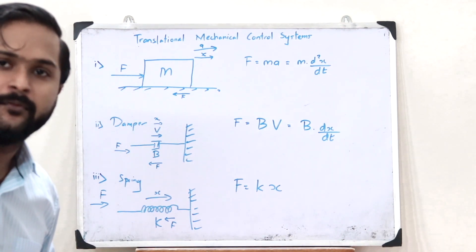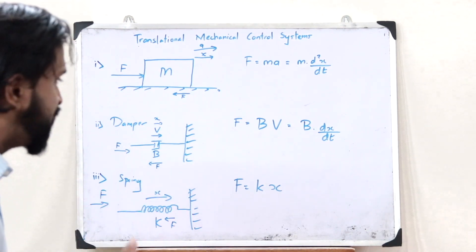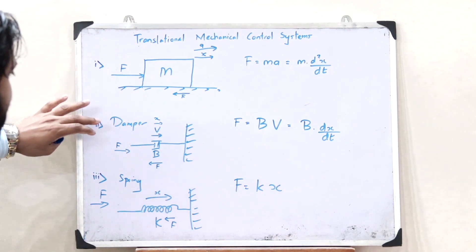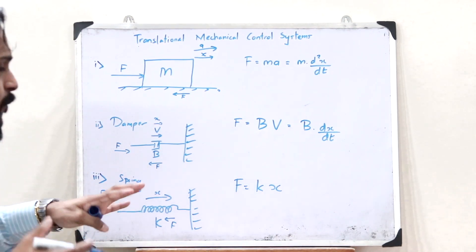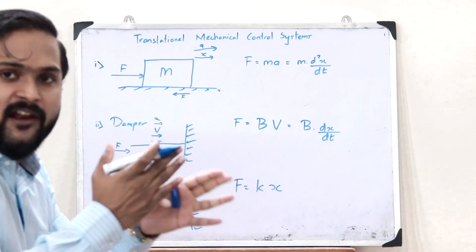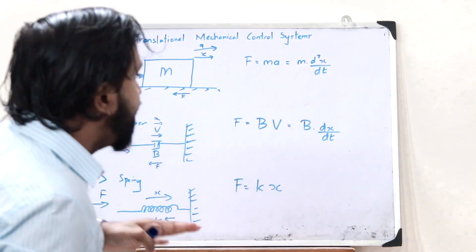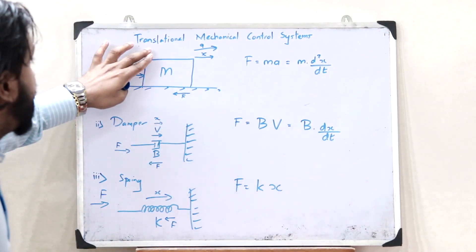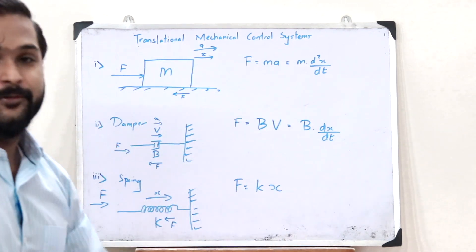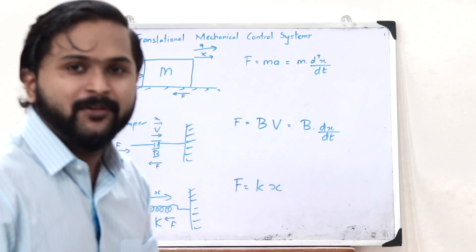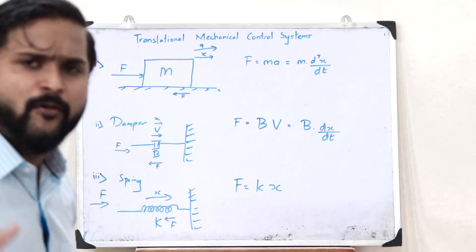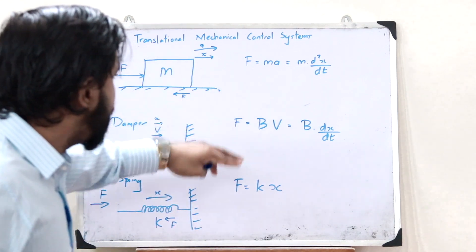So these are the three main forces acting in the case of the elemental components of a mechanical control system when it undergoes translational motion — that is, all three elemental components are moving in a straight line. That is why these are called translational mechanical control systems. Now let us apply the Laplace transform on each of these.